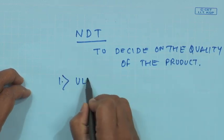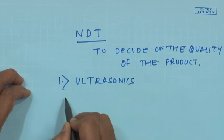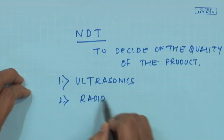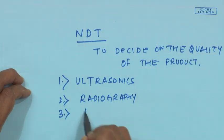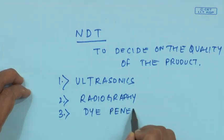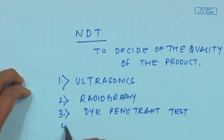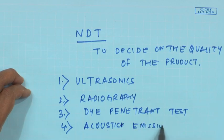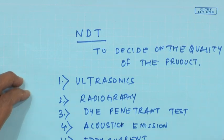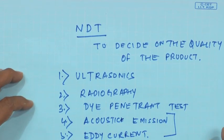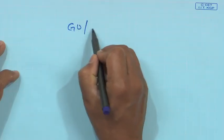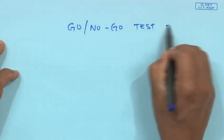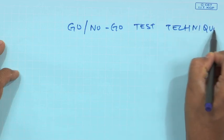Some of the NDT techniques we have covered so far include ultrasonics, radiography, and dye penetrant test. Today we will look into acoustic emission and eddy current, and see how they are used for finding out faults in machinery or product quality. Usually they are used as a go/no-go test technique for quality control.